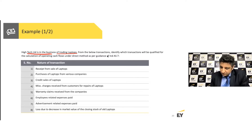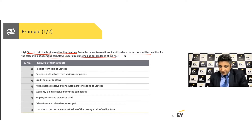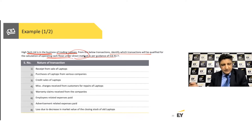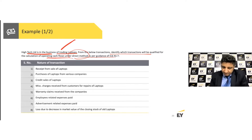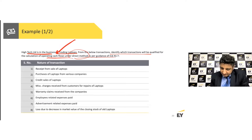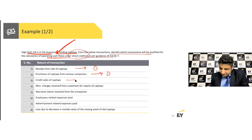Let's look at a question. High Tech Limited is in the business of trading laptops. From the transactions listed, identify which would be considered under operating cash flows using the direct method. Any receipt from the sale of laptops meets operating activities. Purchases of laptops also meet the definition of operating activities. Credit sales, however, are non-cash and must be excluded — remember, only cash movements matter.